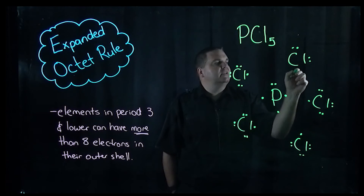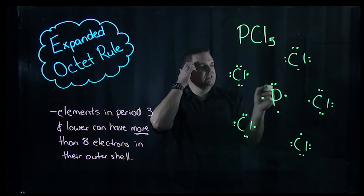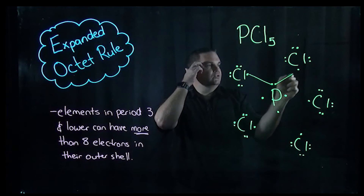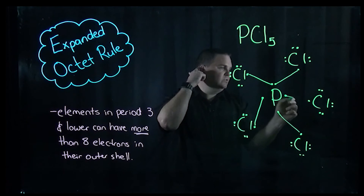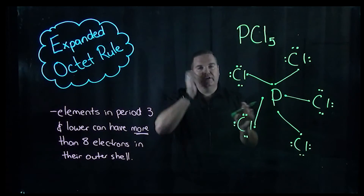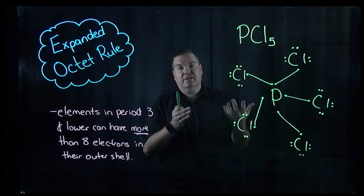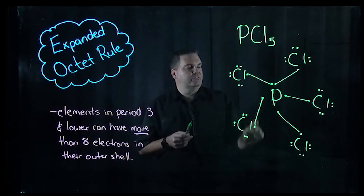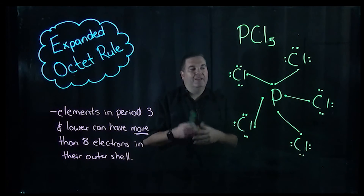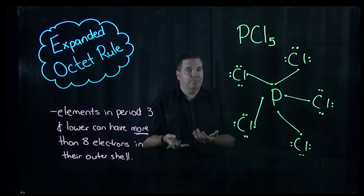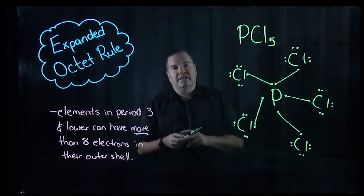We have five electrons on the phosphorus, so we're going to bond single electrons from the phosphorus to each chlorine. Each chlorine ends up with one, two, three, four, five, six, seven, eight electrons — nice and happy. The phosphorus has one, two, three, four, five, six, seven, eight, nine, ten electrons — same as the sulfur in the last example. Again, that's fine because it's in period three and can have an expanded octet. This molecule is PCl₅.